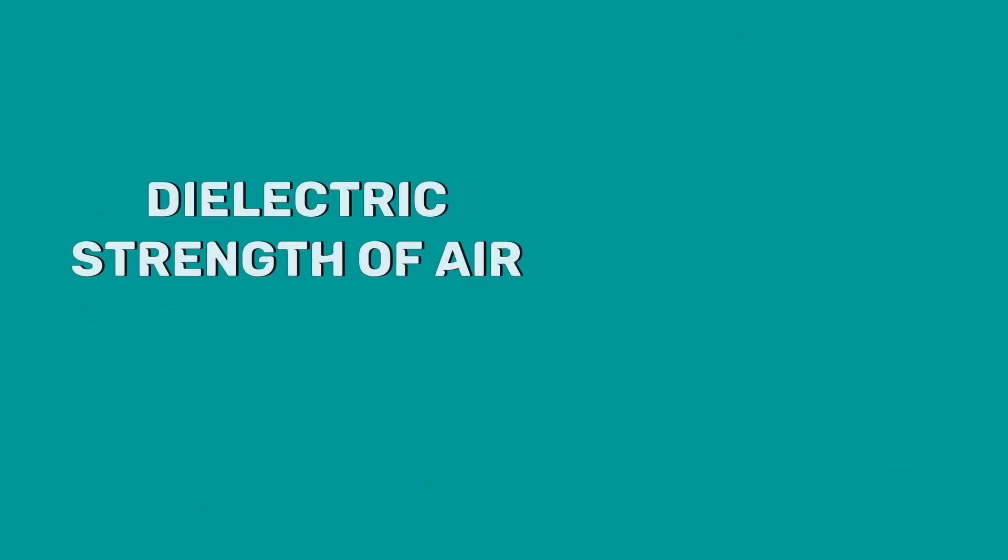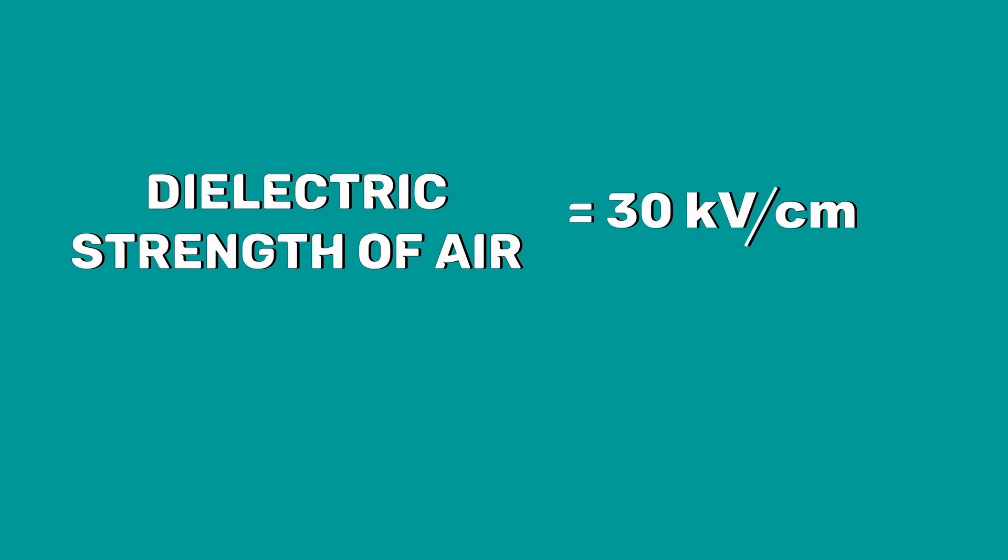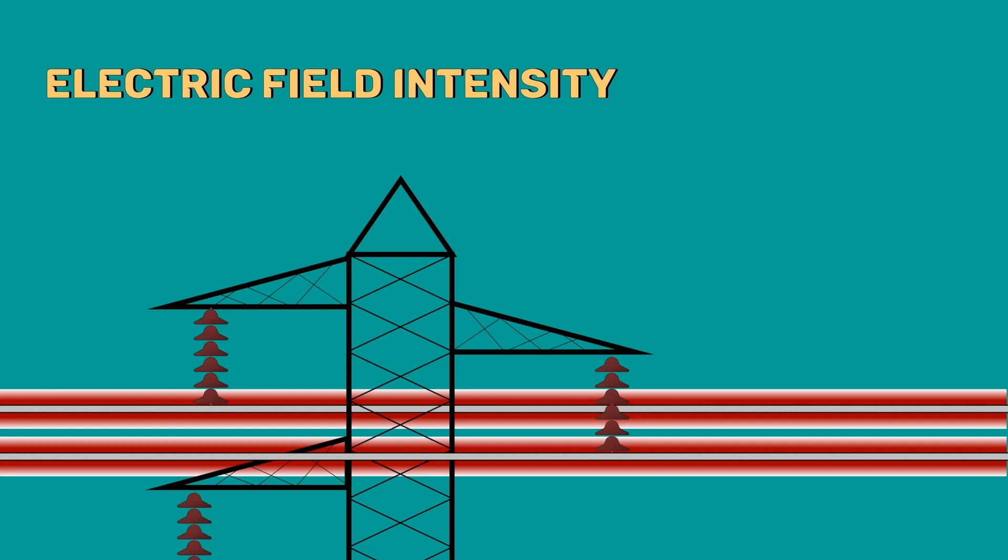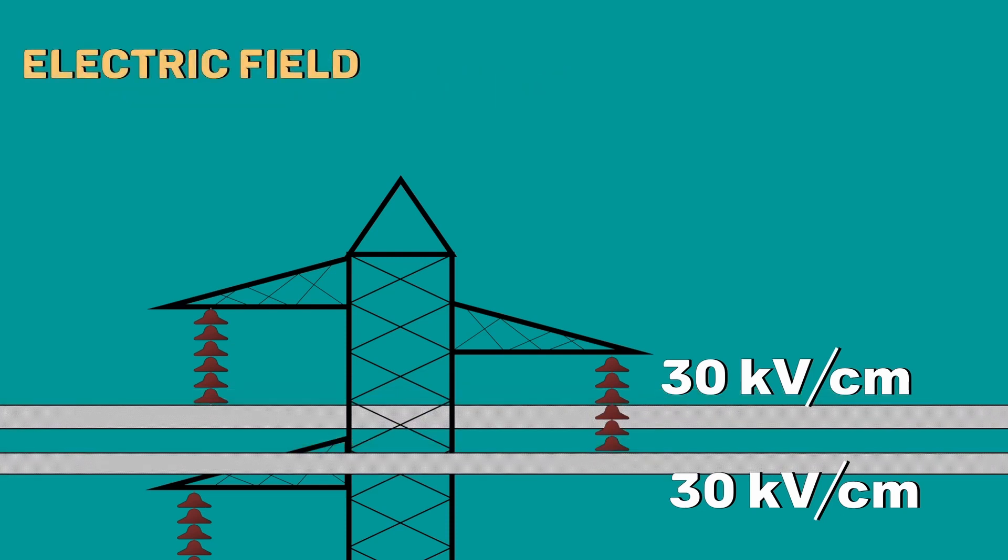The dielectric strength of air is 30 kV per centimeter. When the electric field intensity at the surface of the conductor reaches 30 kV per centimeter, the air around the conductor breaks down and acts as a conductor.